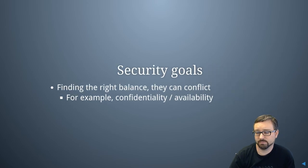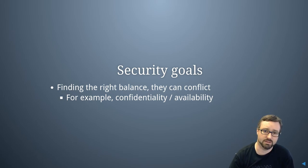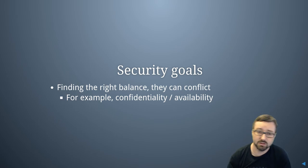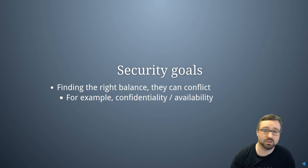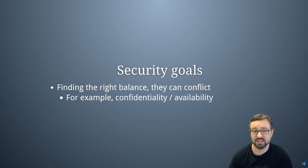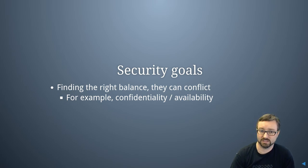There are all these different security goals that people have — whether it's about protecting who can access something, protecting who can change it, or just making sure that services remain available. It's about finding the right balance, because an organization will have goals across all three. For example, taking the bank example from earlier: they don't not have confidentiality requirements — they have those as well. But when they're designing their security, if they know that integrity is their highest priority, that helps in their thinking and the design of the security they put in place.